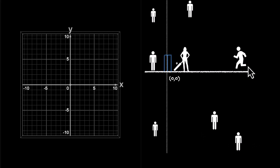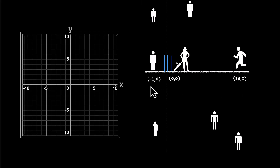This person is 15 units away, so that's (15, 0). The wicket keeper is one unit behind — that's (-1, 0). And similarly, you can mark coordinates for every single one of them.